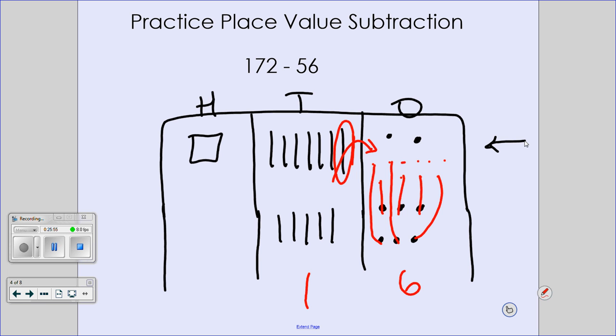What's going on in my hundreds? It's one hundred minus nothing. One hundred minus nothing is... If I have a hundred dollars and I give you zero dollars, how many dollars do I have? One hundred. I have one hundred. If I have a hundred dollars and I give you none, I still got a hundred dollars. What is my difference? One hundred and sixteen.